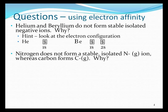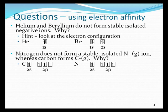Nitrogen does not even form stable, isolated, N minus ions. Carbon does. Well, why? Again, the answer is in the electron configurations.